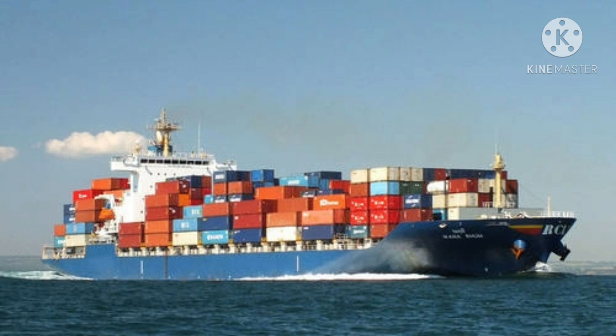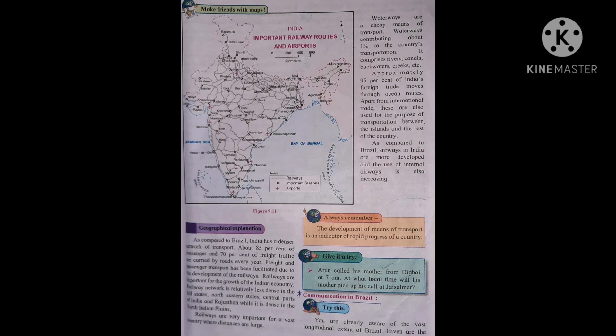As compared to Brazil, airways in India are more developed and the use of internal airways is also increasing. Always remember: the development of means of transport is an indicator of the rapid progress of a country. From this topic, we come to understand that India is rapidly progressing in the transportation area.